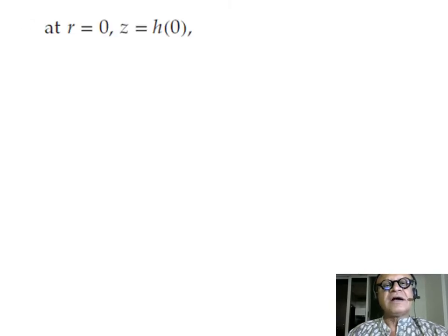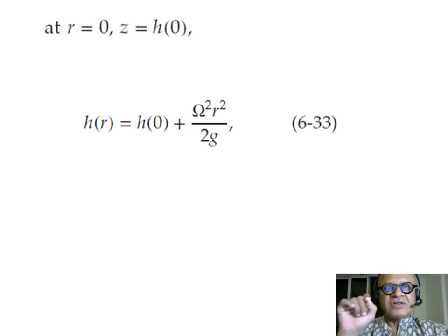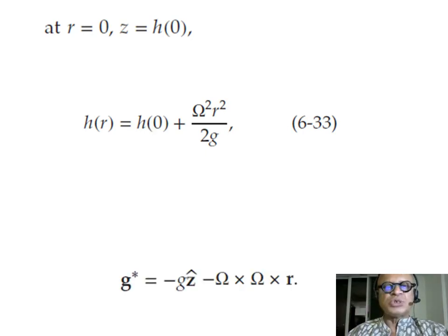Basically, at r equals zero at the center of the tank—remember, r is going from the center towards the edge of the tank—you can derive the relation in terms of the height at the center plus omega squared r squared over 2g.